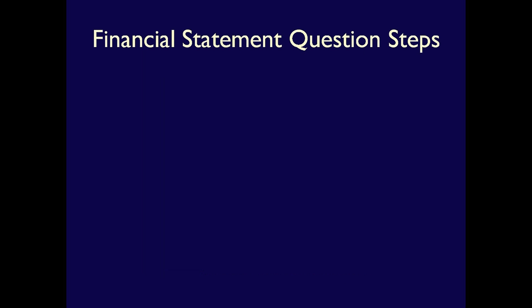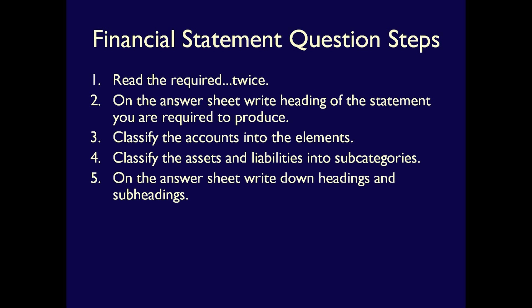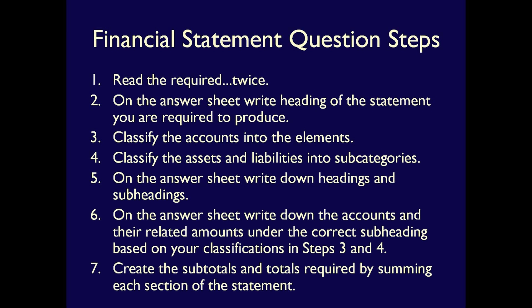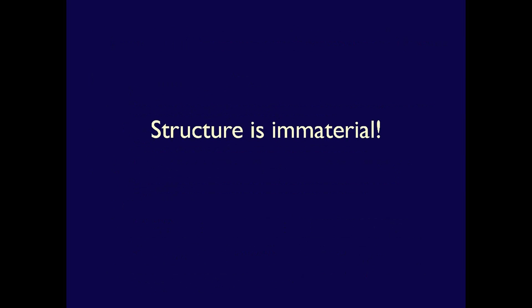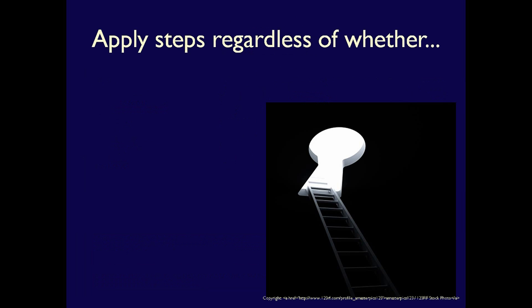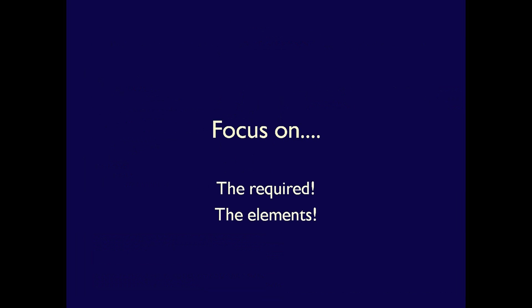Let's look at the steps to attack a financial statement question one more time. Step 1: read the required twice. Step 2: write down the heading of the statement, including company name, title, and required dating. Step 3: classify the accounts into financial statement elements. Step 4: classify all assets and liabilities into their subcategories. Step 5: write down the headings and subheadings on your answer sheet. Step 6: write down the accounts and amounts under the correct heading or subheading. Step 7: add the accounts to create all subtotals and totals. Remember, the structure of the question doesn't matter — you can apply these steps to any style, whether ASPE or IFRS. Following the steps lets you focus on what's important: the required and the categorization of accounts into financial statement elements.